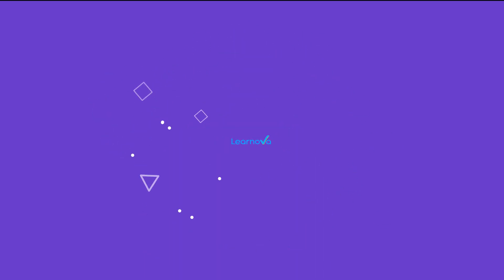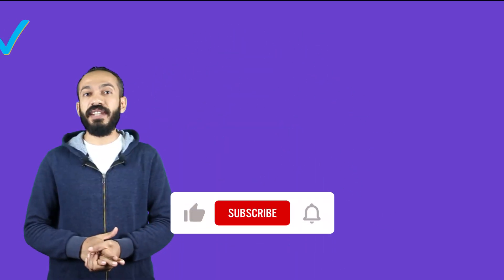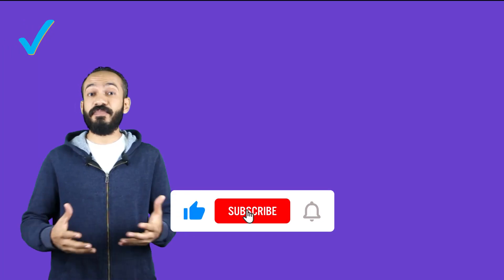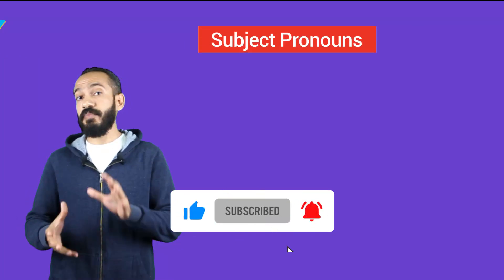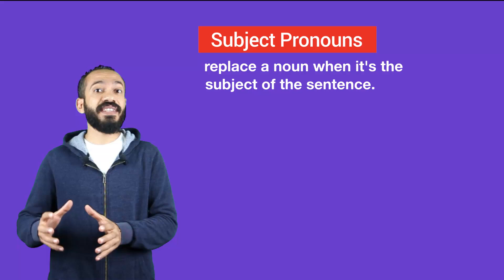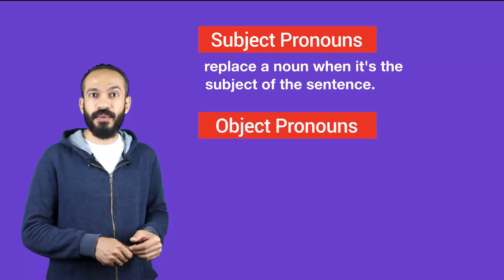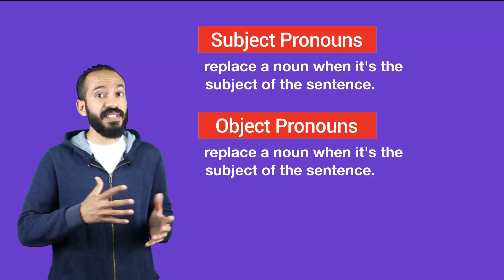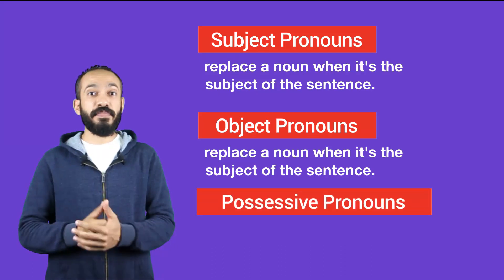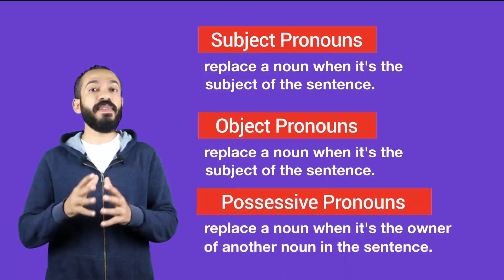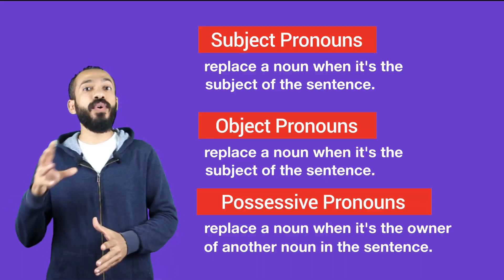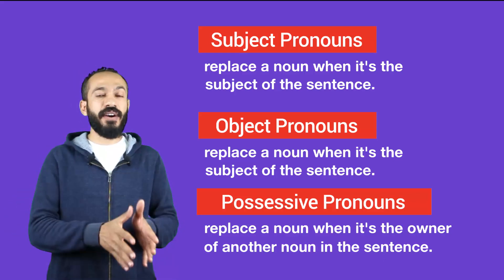Hi there, this is Malik and in this video we will explain everything about possessive pronouns and adjectives. In a previous video, we explained about subject and object pronouns. Subject pronouns are pronouns that replace the noun when it's actually the subject of the sentence. Object pronouns replace the noun when it's the object of the sentence. But possessive pronouns and adjectives replace the noun when it's the owner of another noun in the sentence.